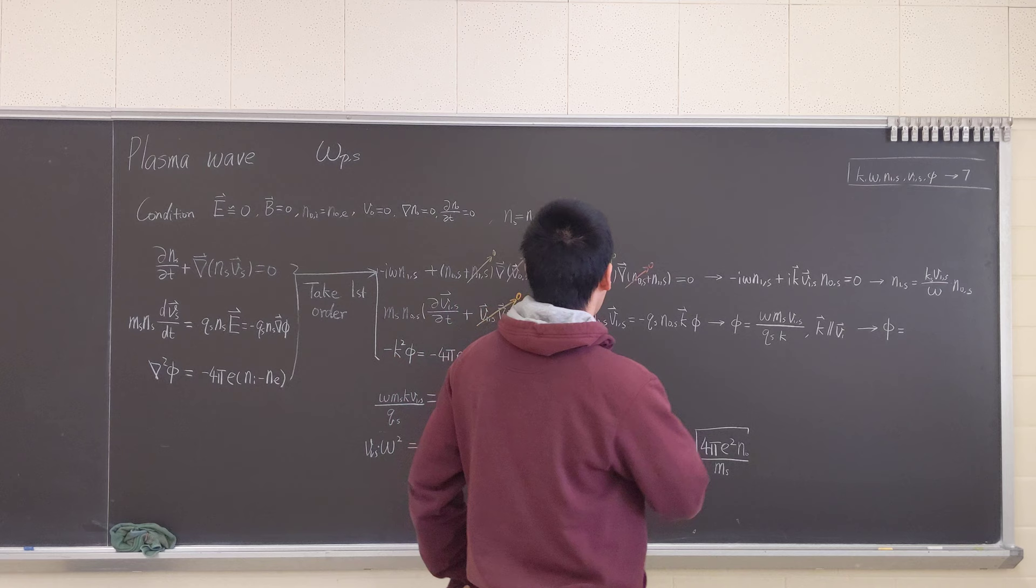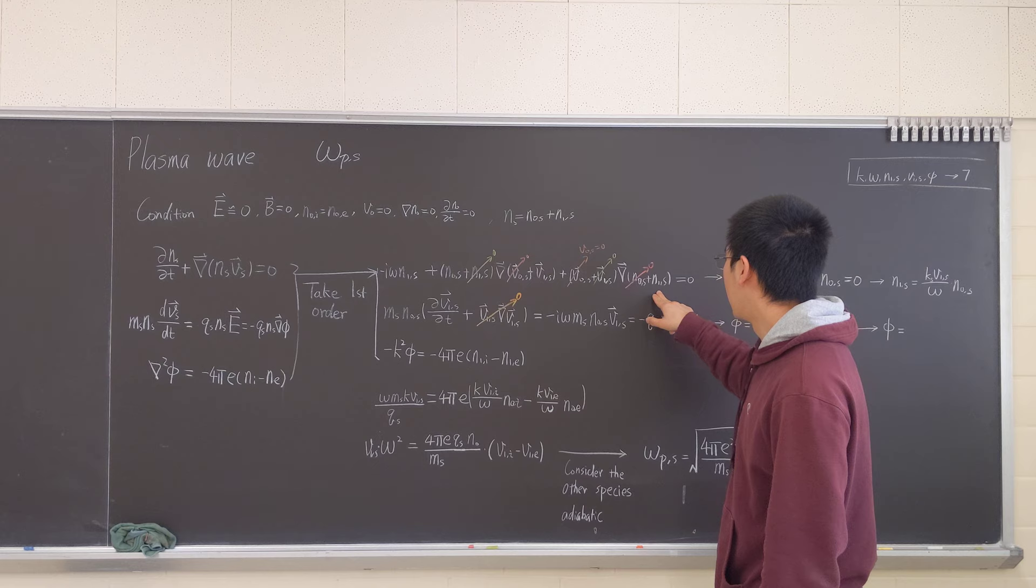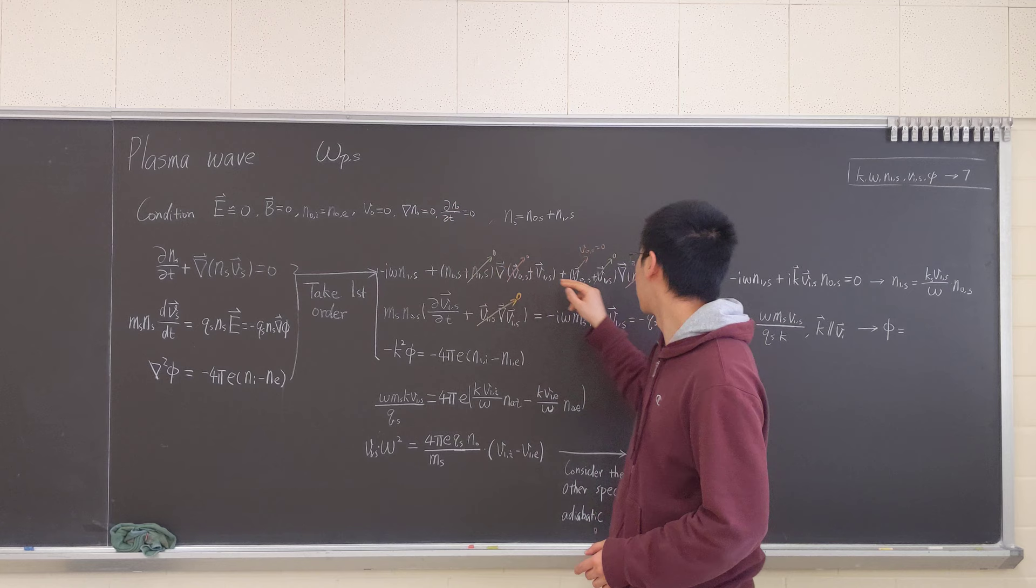So we're only left with this term. And we know that V0 is zero here. And we know that V1 and N1 combined will give us a second order. And also N0 is homogeneous, so this will be zero. So this whole term is gone.